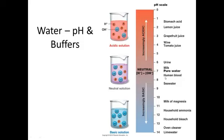Your body needs to stay at a pH of just a little bit alkaline. So it uses buffers to maintain that pH. Buffers are salts, or more usually weak acids or weak bases, that can adjust to an increase or decrease in hydrogen ions by either taking up hydrogen ions or releasing them.